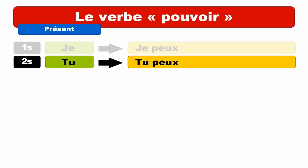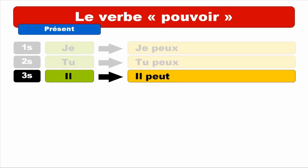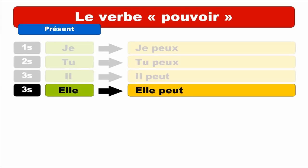So let's see how IL goes — IL PEUT. Same way of pronunciation — you've got a T at the end but you don't pronounce it. IL PEUT. ELLE, feminine form, third person of the singular — same way. ELLE PEUT. Repeat. ELLE PEUT.